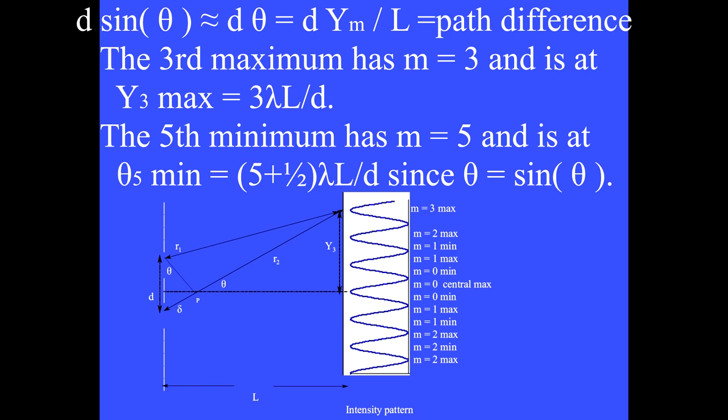The third max has m equal 3, and is at y equals 3 lambda L over d. The fifth minimum has m equal 5, and is at theta 5 equal 5 plus a half lambda over d.